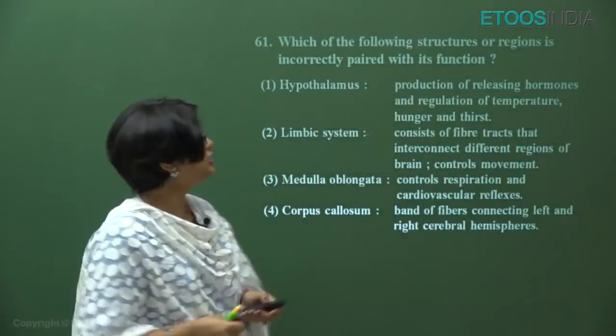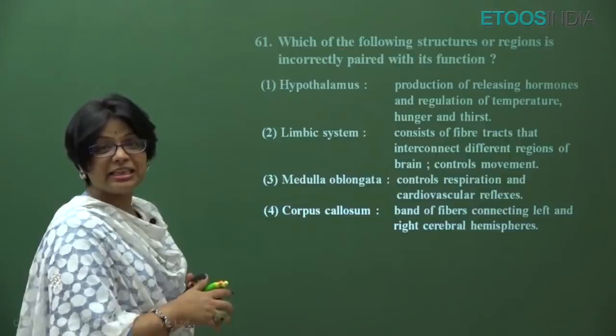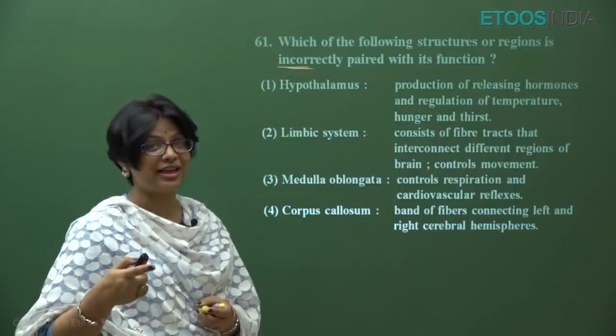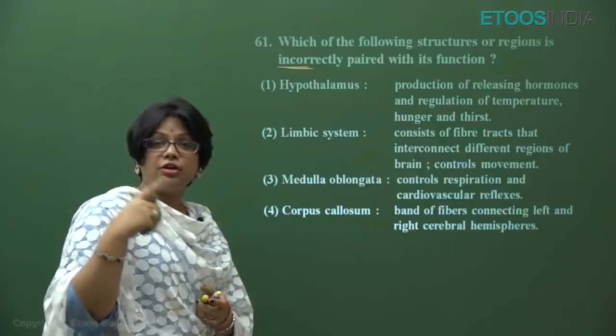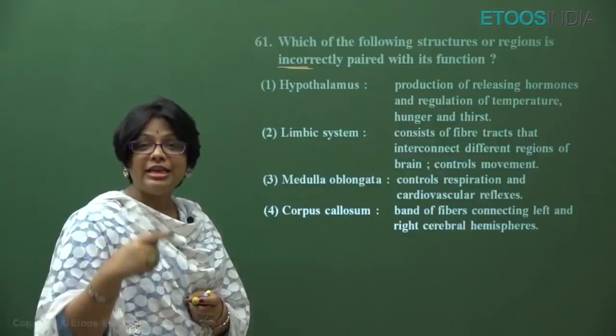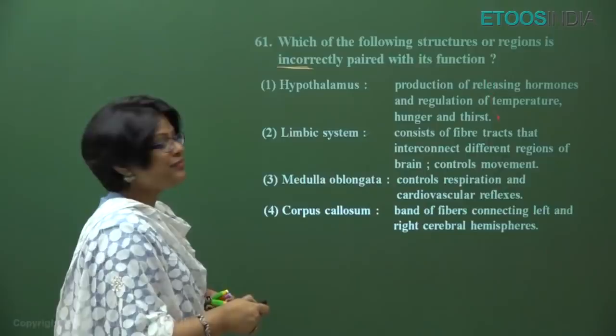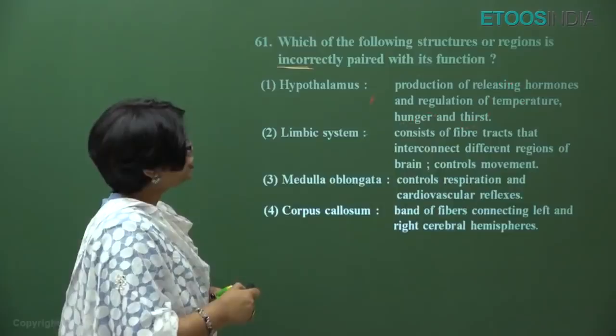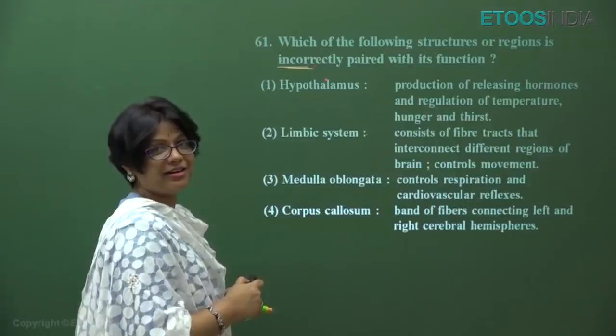Question number 61: which structure or region is incorrectly paired with its function? Hypothalamus — production of releasing hormones — yes, growth hormone releasing hormone, gonadotropin releasing hormone, etc. affect anterior pituitary. Hypothalamus is also the thermostat of the body, has hunger and thirst centers. So hypothalamus is correctly matched.